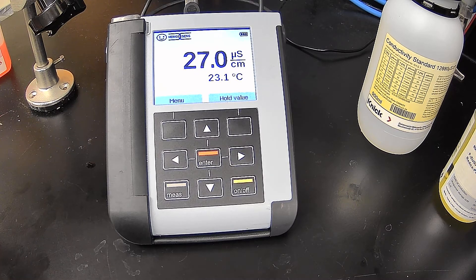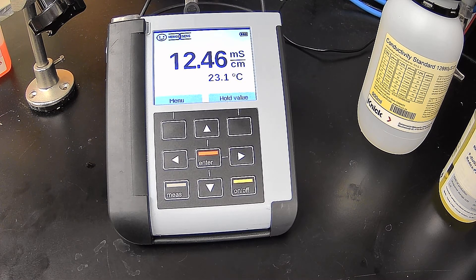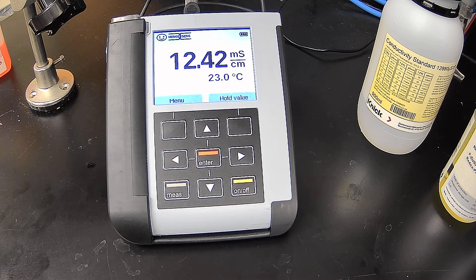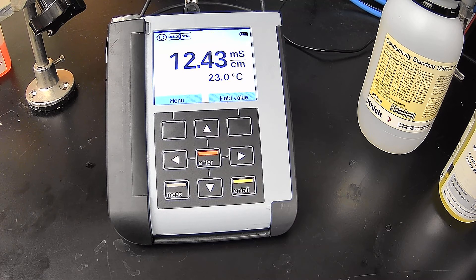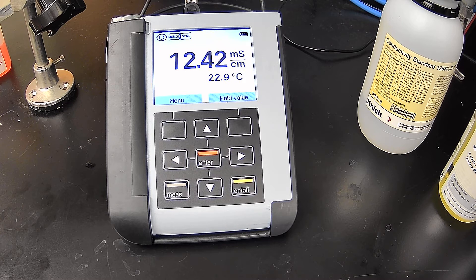That would include buildup, obstructions, anything like that. So when you go to do the calibration of an electrode like this, you want to make certain that it is clean, that there's no debris or buildup in that gap that could influence the conductivity reading during calibration and of course when it's in process.